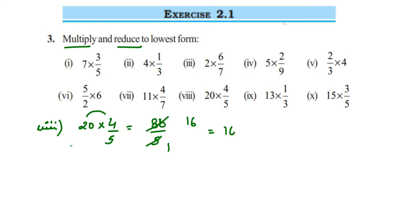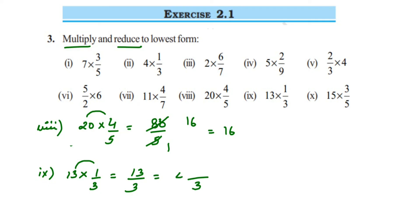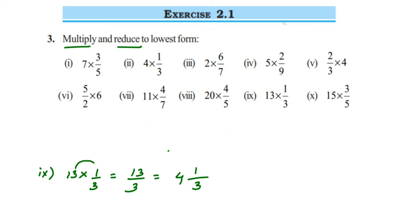The ninth question: 13 multiplied by 1/3. We cannot cancel them, so multiply: 13 × 1 = 13, giving 13/3. Converting to mixed fraction: 3 × 4 = 12; remainder is 13 − 12 = 1. So the answer is 4⅓.